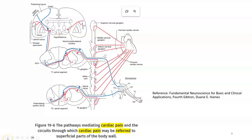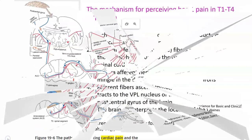Parasympathetic afferents carried by the vagus nerve are associated with baroreceptors and chemoreceptors. Visceral afferent fibers traveling with the sympathetic system are associated with pain, especially cardiac referred pain.